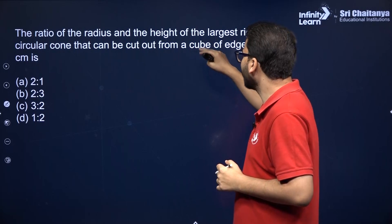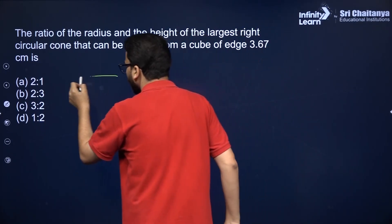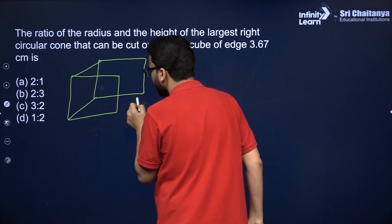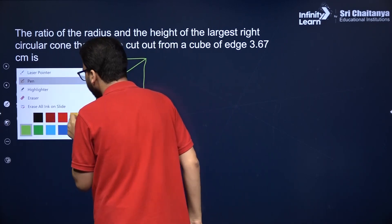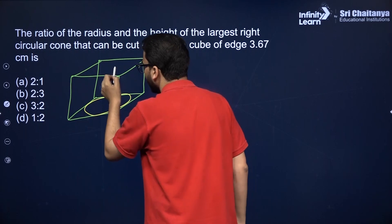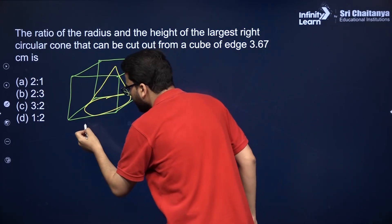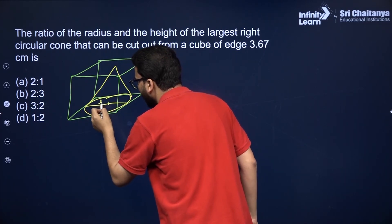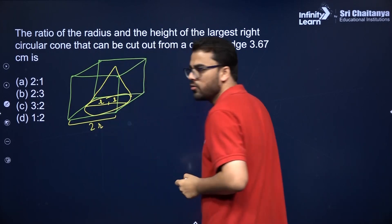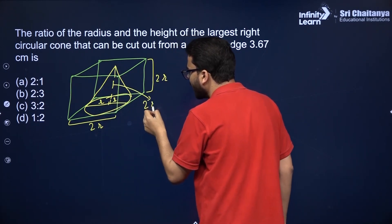The ratio of the radius and the height of the largest right circular cone that can be cut out from a cube of a given edge. Basically, the edge value is just given to confuse you — you don't actually need it. You have a cube, and the largest right circular cone that can fit inside it will be visualized in 3D. Suppose the radius of the cone is R. Then the edge of the cube will be 2R, and this is also 2R. So the height of the cone is also equal to 2R itself.